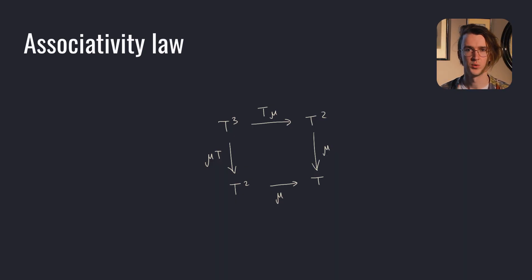The associativity law says that we can multiply on the right first or on the left first and the result is the same. The two ways of reducing the cube of T down to T must give the same result. We can either map mu over T, collapsing the inner two layers of T cube first, denoted by T mu here, or we can lift mu to T, collapsing the outer two layers first, denoted by mu T here, and the T square can be reduced to T using mu. If the diagram commutes, the law is satisfied.